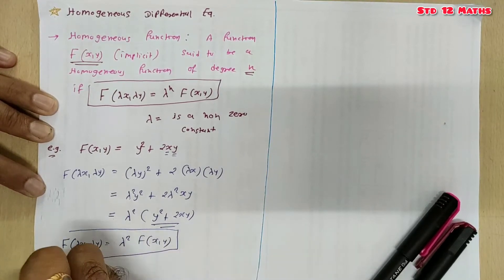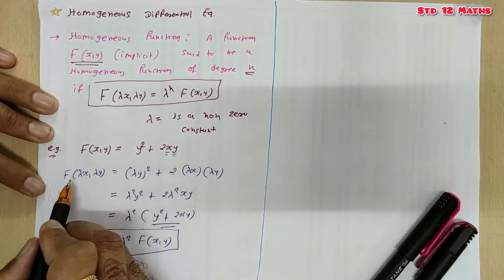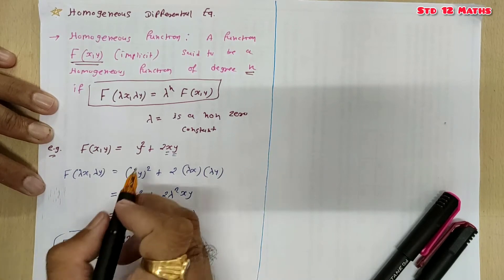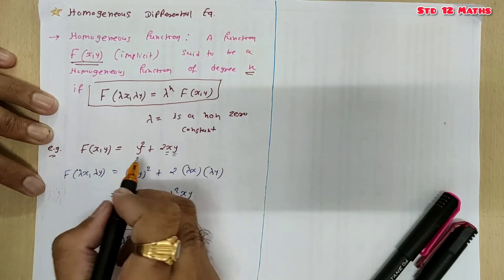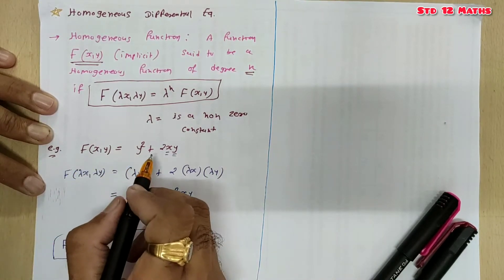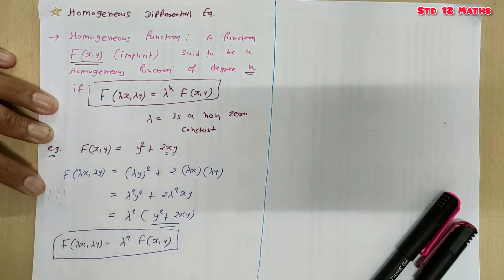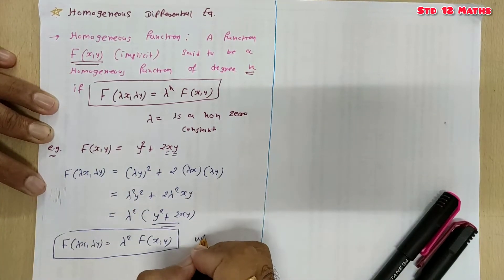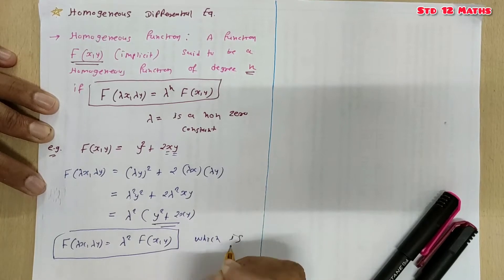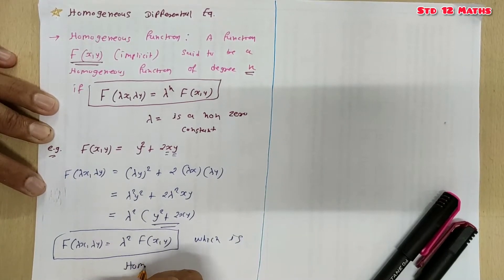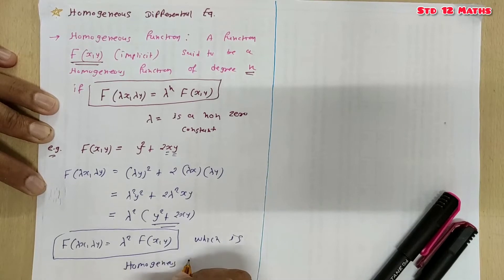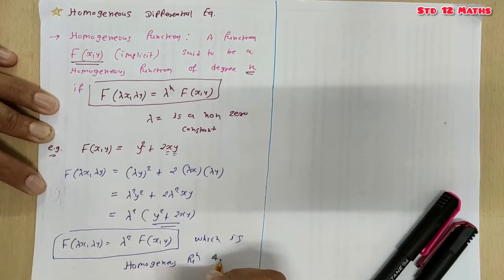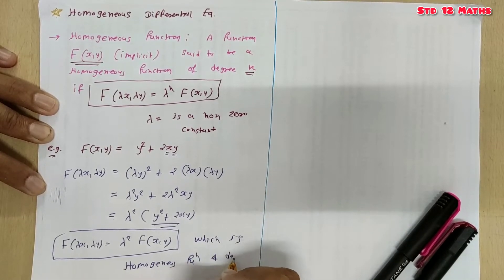This means the given function f(x, y) = y² + 2xy is a homogeneous function of degree 2, since the power of λ is 2.